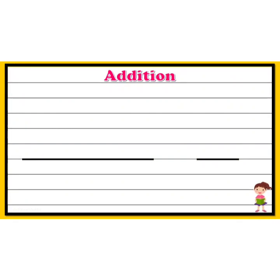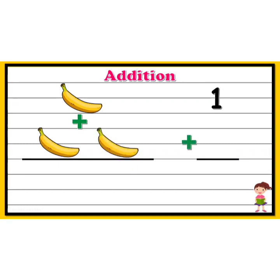I will be showing you an example with a set of pictures where you have to add the objects to find the total. We have one banana plus two bananas. You have to find the total number of bananas. Let's start counting: one, two, three. Totally we have three bananas. So, one plus two gives three.